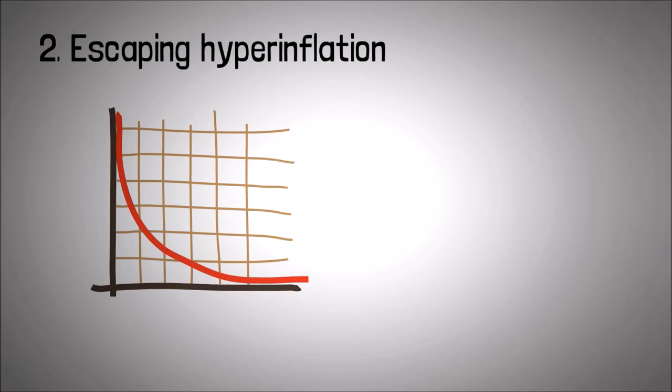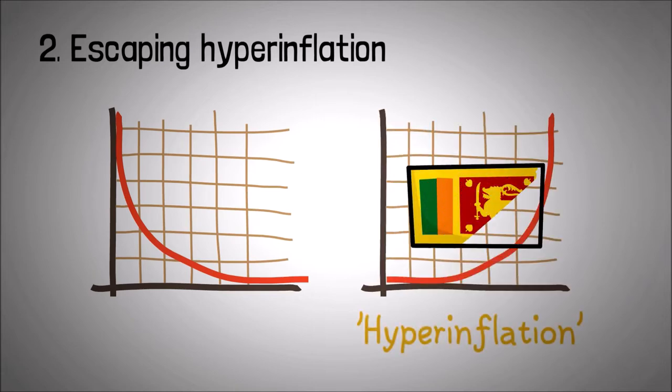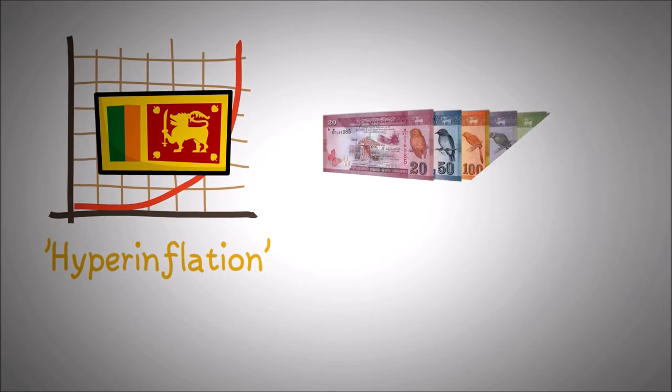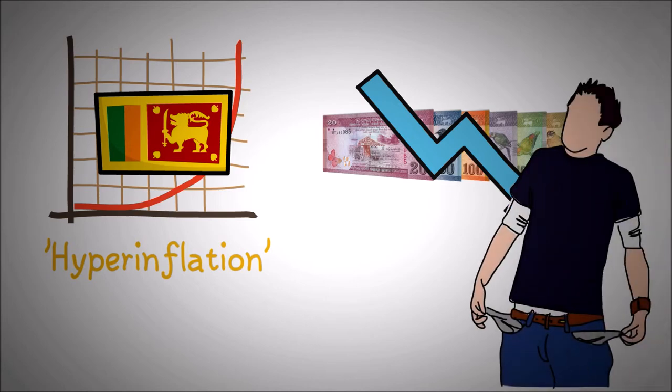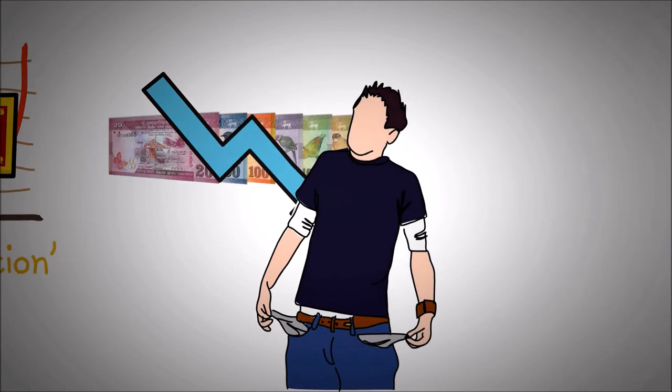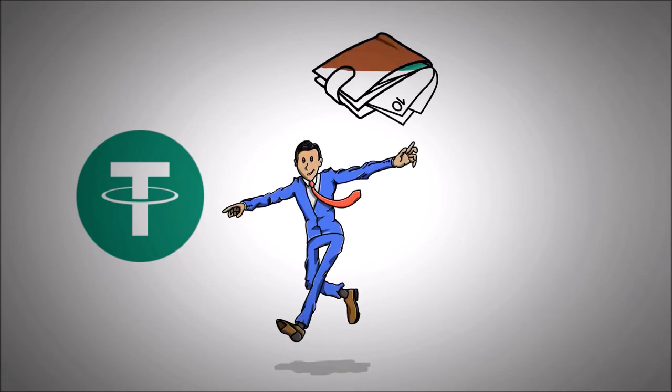2. Escaping hyperinflation. Failing economies usually see a trend of hyperinflation, a recent example of which is Sri Lanka. Those countries' respective currencies become weaker day by day. This means that the average person living in such failed economies is losing the value of his or her money. The stablecoins like Tether allow an escape from this and protect the purchasing power of the money of common people.